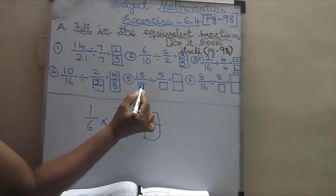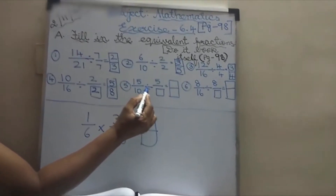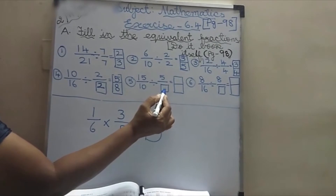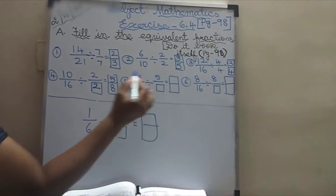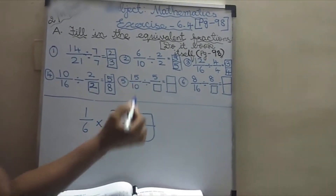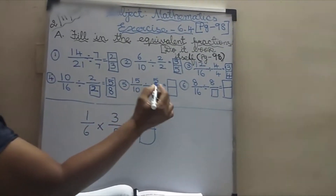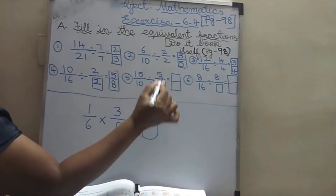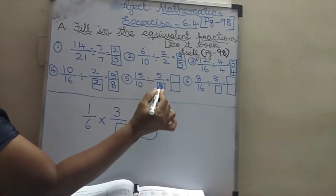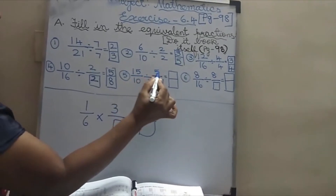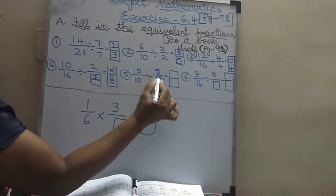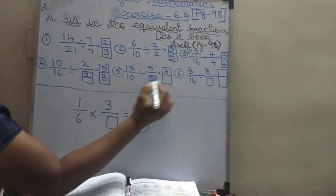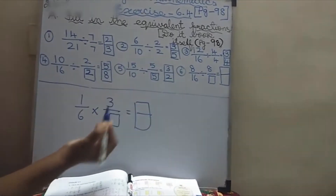The fifth sum: 15 by 10 divided by 5. Fill in the boxes they have given. What will come? Any guess? 5 — because the same number should be written here. In 5 tables: 5 3s are 15 and 5 2s are 10.